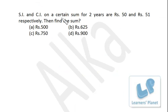Next problem: SI and CI on a certain sum for 2 years are Rupees 50 and Rupees 51 respectively. Find the sum.